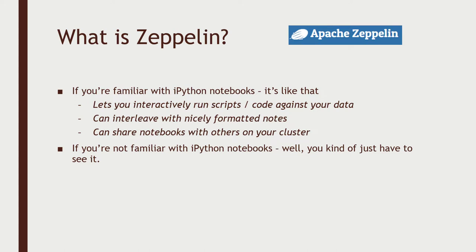At a high level, Zeppelin lets you interactively run scripts and code against your data. So instead of writing a big monolithic script offline and then running it on your cluster, it speeds up the development cycle. It lets you experiment more easily with different code and scripts that process and analyze your data. It also lets you interleave nicely formatted notes that make your code more readable — you can put in information about what you're doing and why. It also lets you share notebooks with other people on your cluster so you can collaborate more easily and share your results.